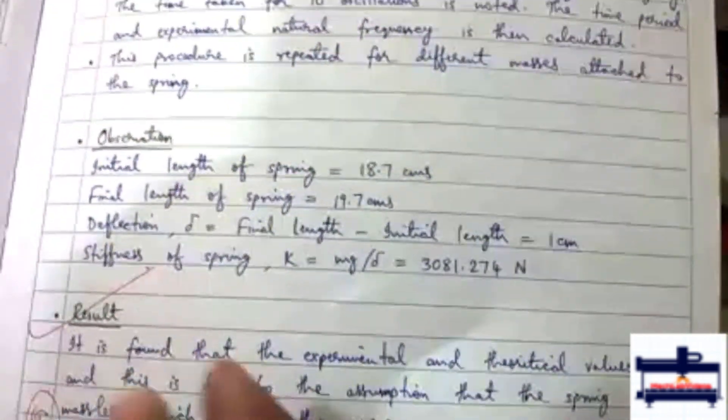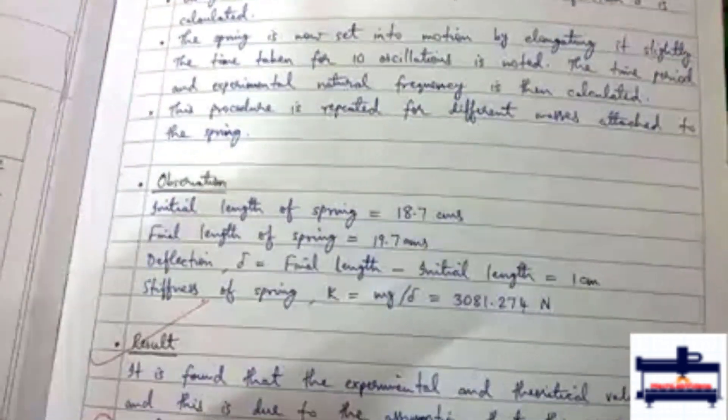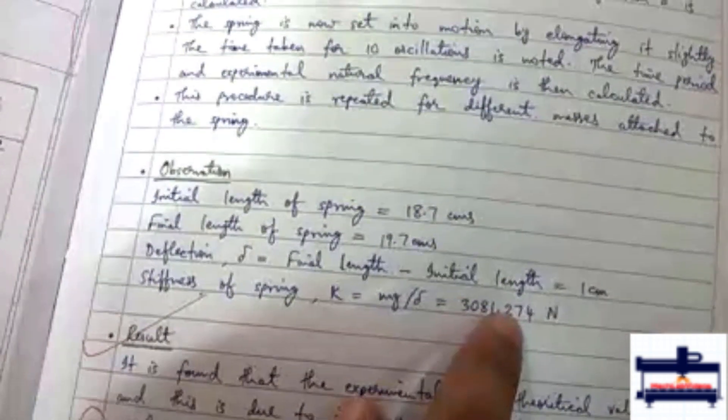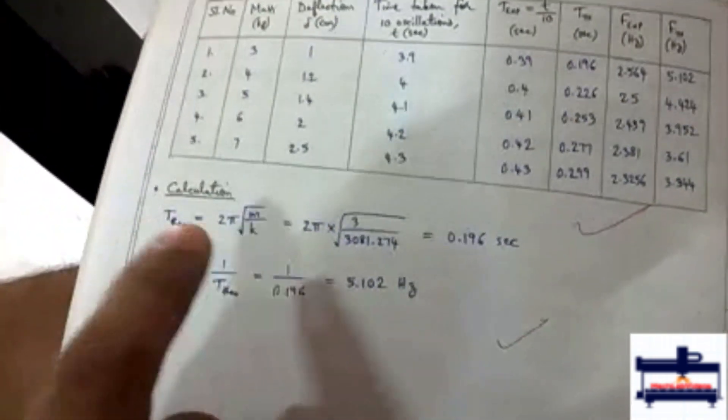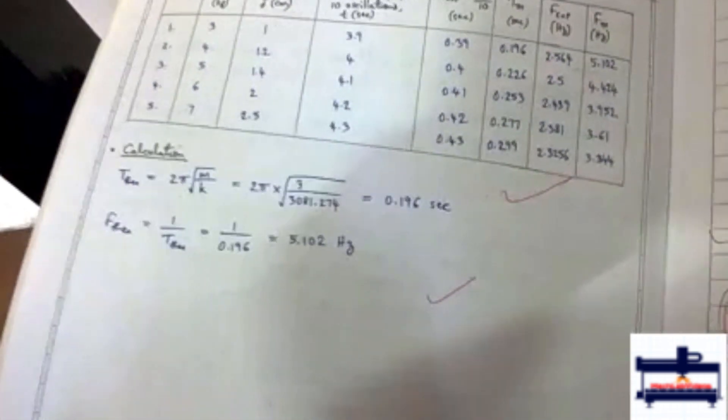We find mg by delta for every mass and get different values of stiffness for each load. Then we add all the loads and find the average. This average stiffness is used for calculating all the theoretical time periods and frequencies. We are not supposed to use different values of stiffness for different loads.